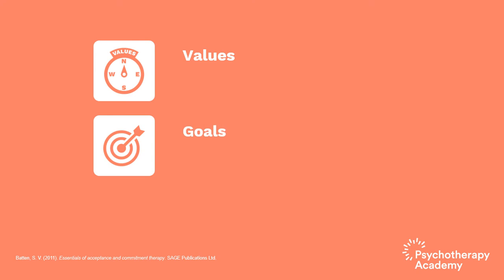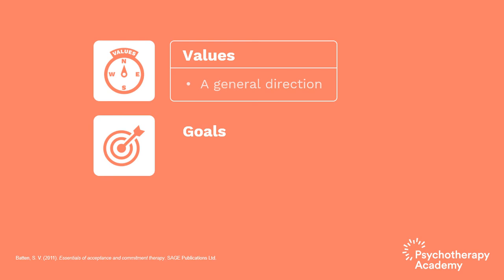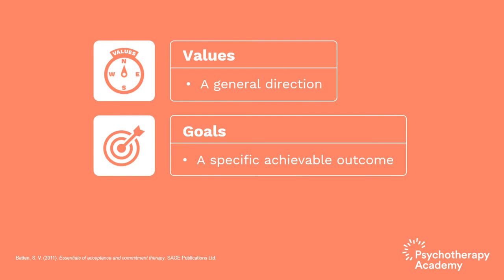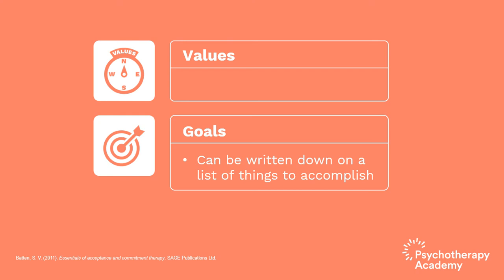It's important in ACT to distinguish between how we use the term values and how we use the term goals. In regular conversation, you may use those terms interchangeably, but in ACT, each of those two terms has a specific meaning and usage. A value is seen as a general direction in which you want to head in your life, whereas a goal is a specific achievable outcome that you can target in service of a value. A goal is something that can be written down on a list of things to accomplish and eventually scratched off when achieved, but a value is a direction that can never be fully attained — there's always more to do.